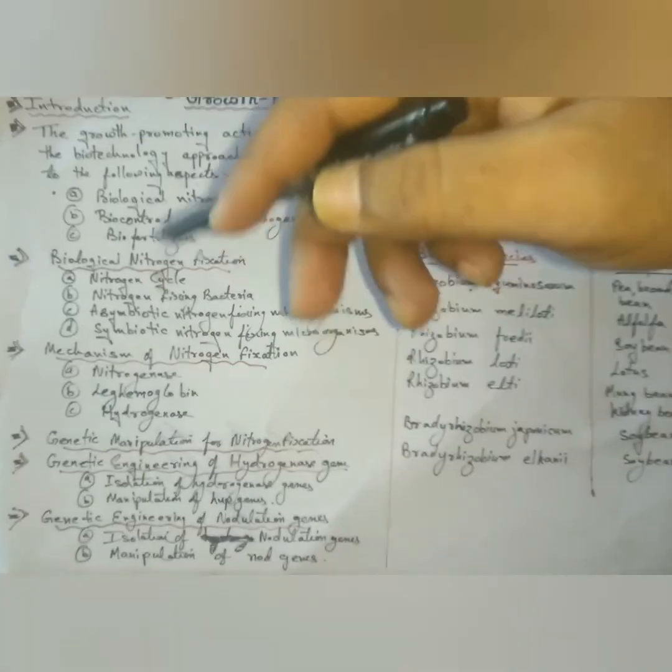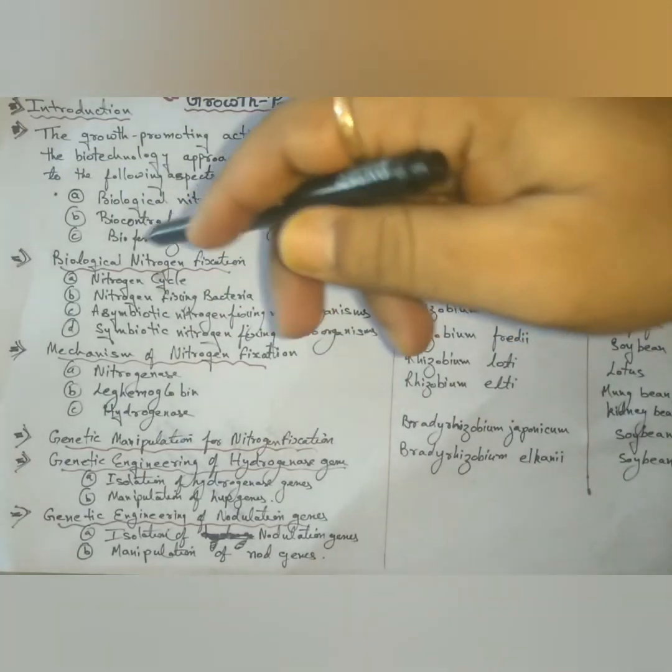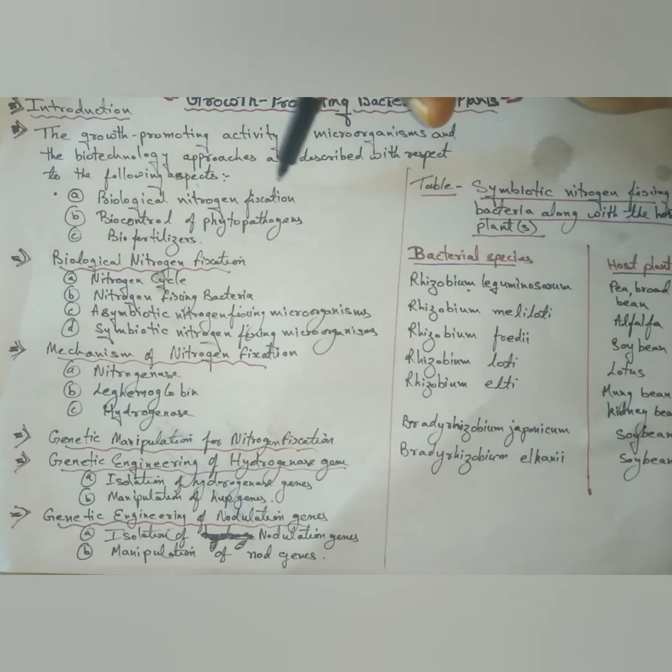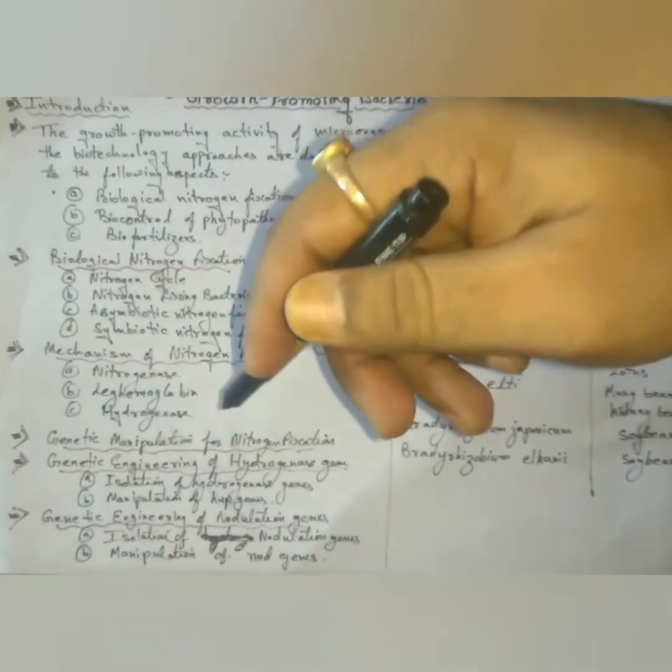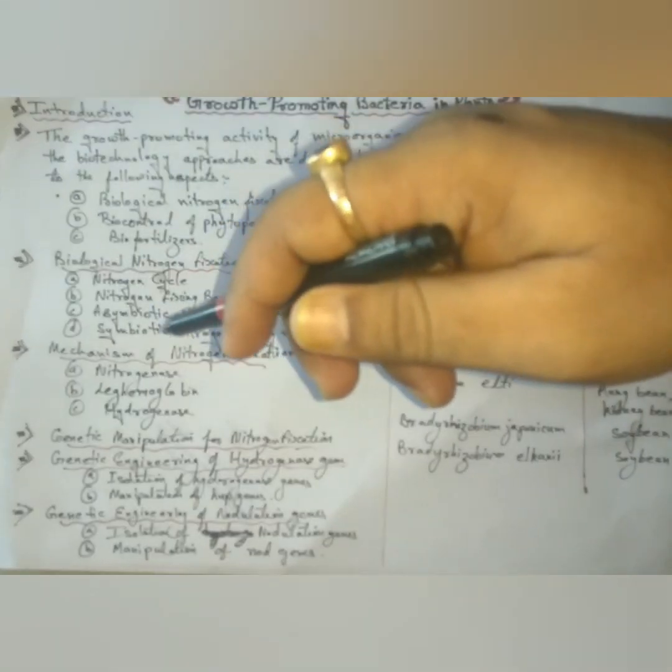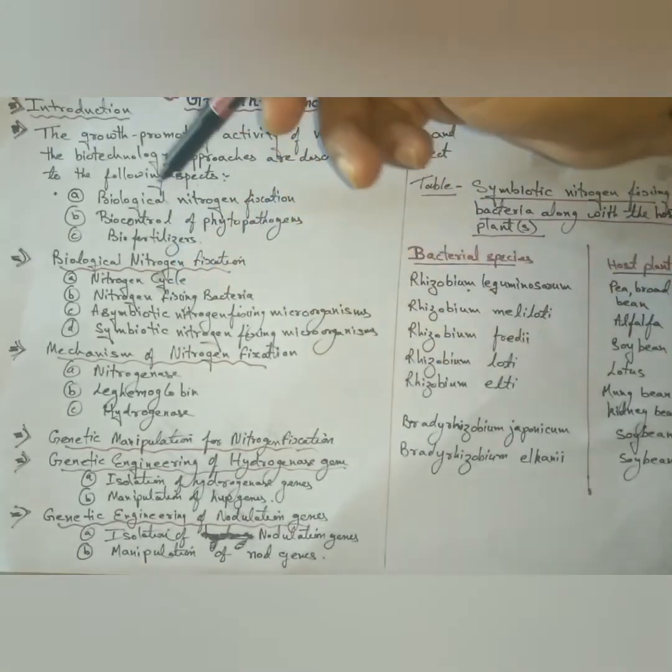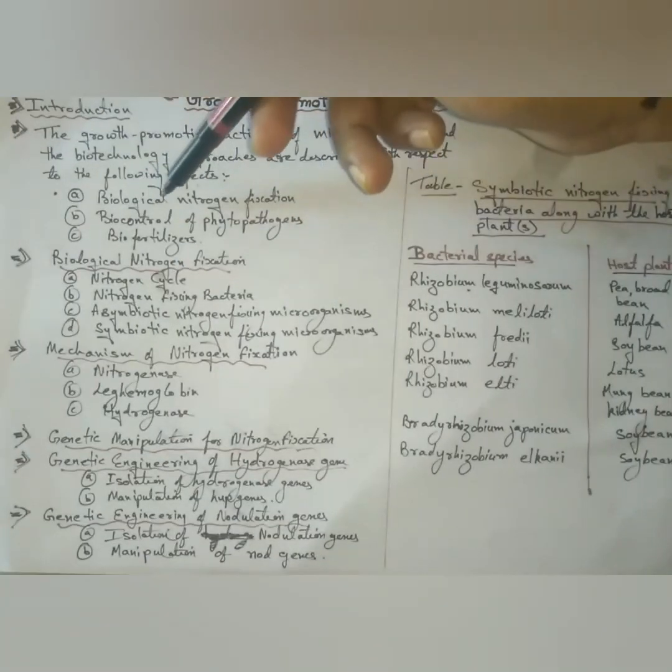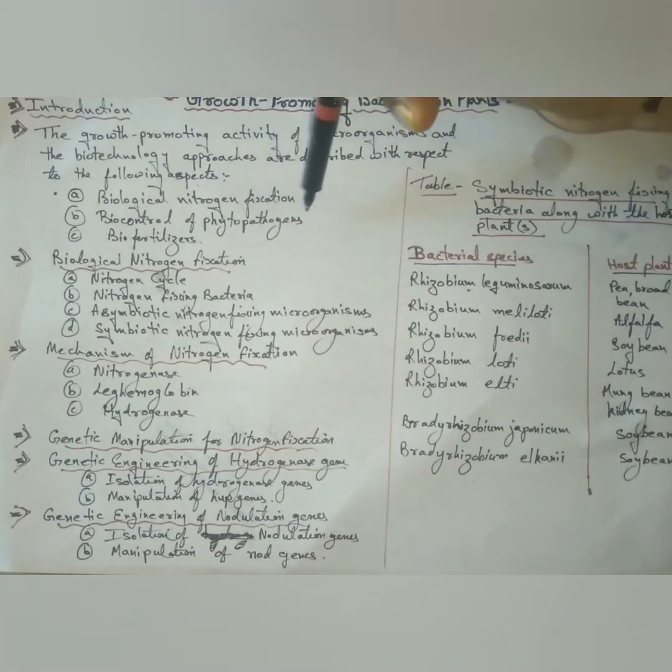So, this is overall about Growth Promoting Bacteria and Plants Part 1, Biological Nitrogen Fixation. Next, in Growth Promoting Bacteria and Plants Part 2, we will continue about Biocontrol of Phytopathogens and Biofertilizers. Thank you.